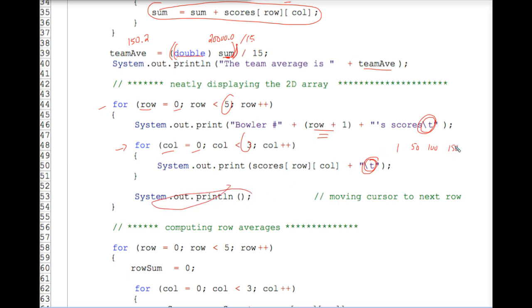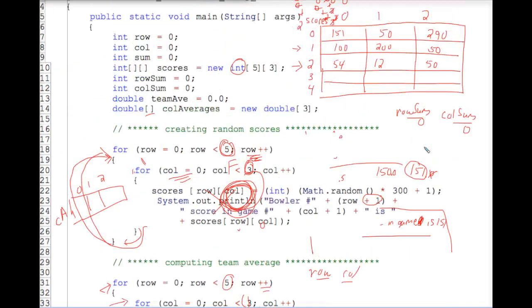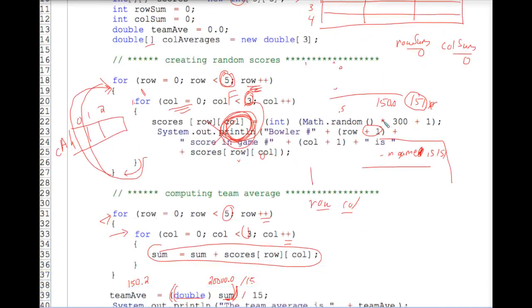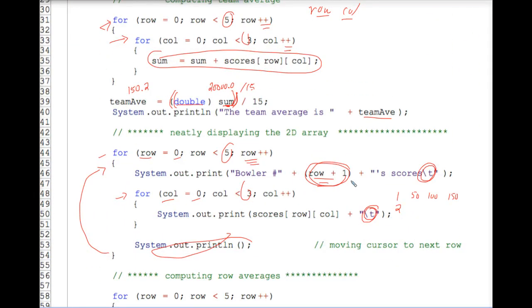At which point, this println will cause the blinking cursor to move down to the next line of your output window. And when you then recycle back up to the outer for loop in row plus plus, you end up printing out the information for bowler number one. I'm sorry, bowler number two, if you want to look at it that way. Which is really row number one up above. Get it? Bowler one is the information that's found in row zero. Bowler two has his or her information in row one, et cetera.